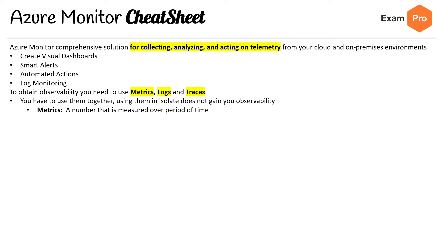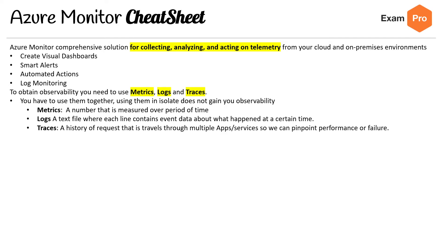Metrics is a number that is measured over a period of time. Logs is a text file that contains event data about what was happening. Traces is a history of requests that travels through multiple apps and services, so we can pinpoint performance or failures.